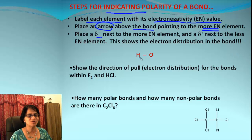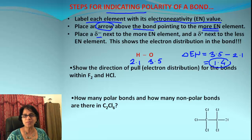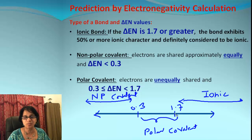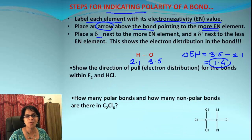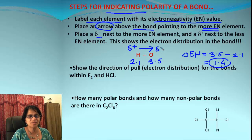Let's take the example of a bond between hydrogen and oxygen. The electronegativity value for hydrogen is 2.1 and for oxygen it is 3.5. So delta En will be the difference: 3.5 minus 2.1 equals 1.4. Since 1.4 is between 0.3 and 1.7, this is a polar covalent bond. The arrow goes from hydrogen toward oxygen — the more electronegative element — and hydrogen is delta positive while oxygen is delta negative.